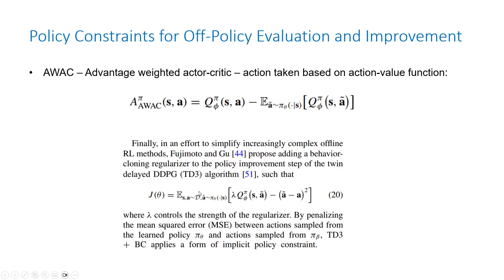In TD3+BC, the action from the new policy and the action from the dataset are compared, and a lambda coefficient controls the penalty. Basically you train the Q function but also penalize for going out of distribution to avoid distribution shift.